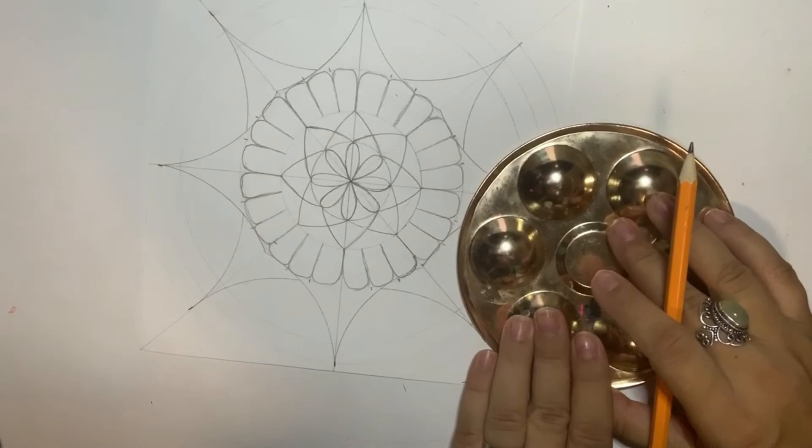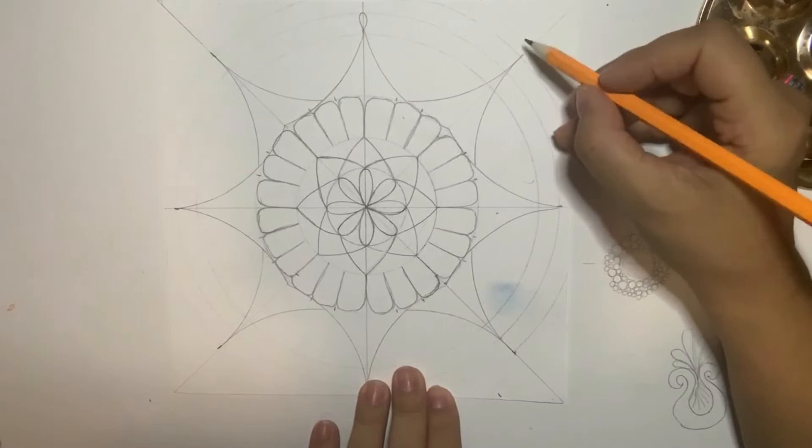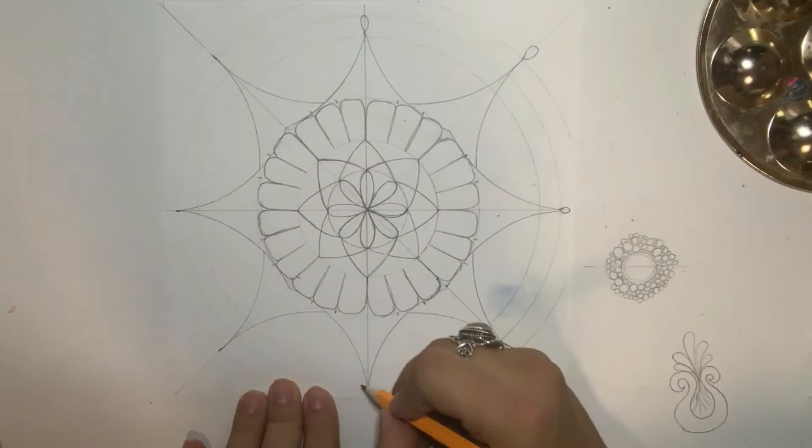And then we're going to make a detail on the top because it's maybe too pointed, to soften a little, to make it smoother. Then we make this tiny petal just like this.